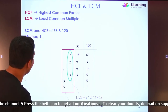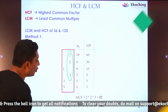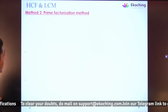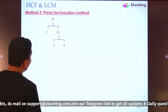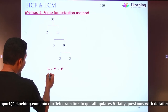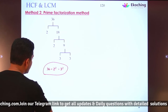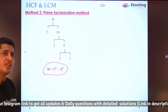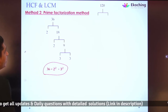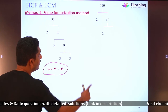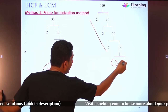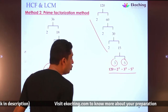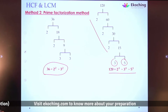Now let's look at another method to find HCF and LCM — the prime factorization method. For numbers 36, 120, and others, we already know 36 = 2² × 3². For 120: 120 = 2 × 60 = 2 × 30 = 2 × 15 = 3 × 5. So 120 = 2³ × 3¹ × 5¹.